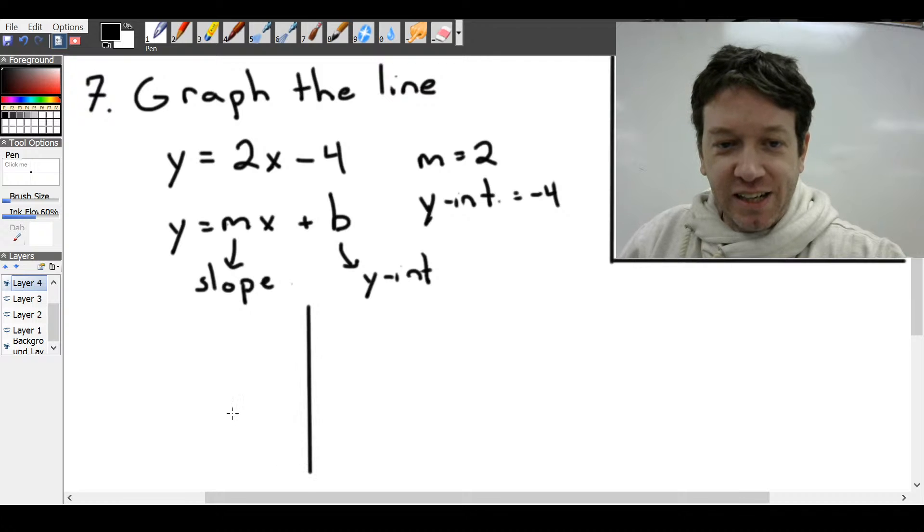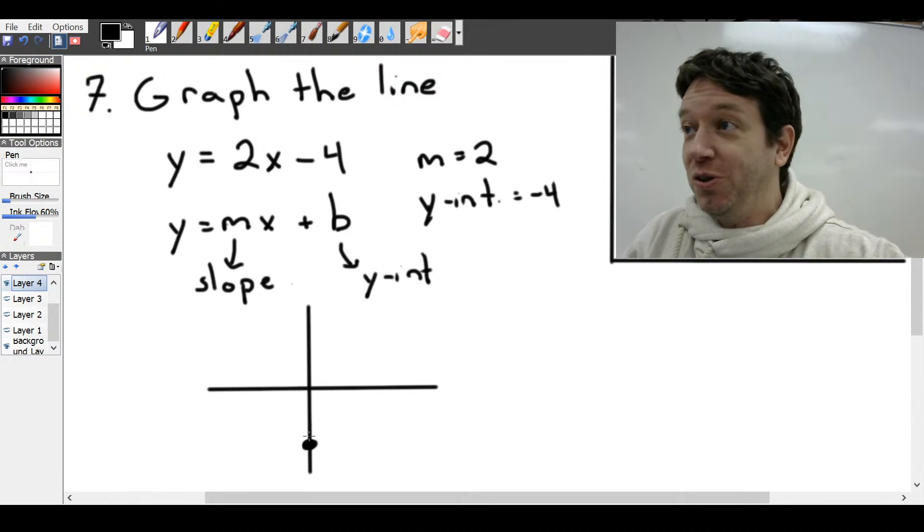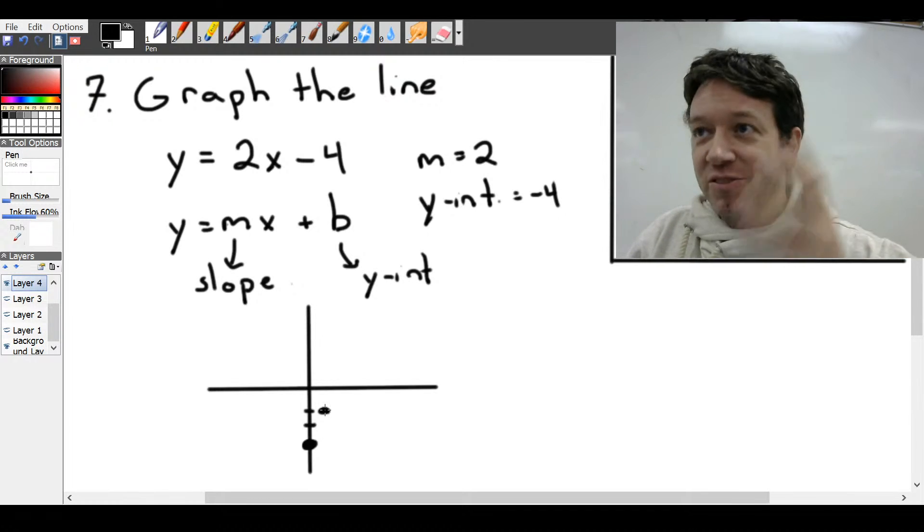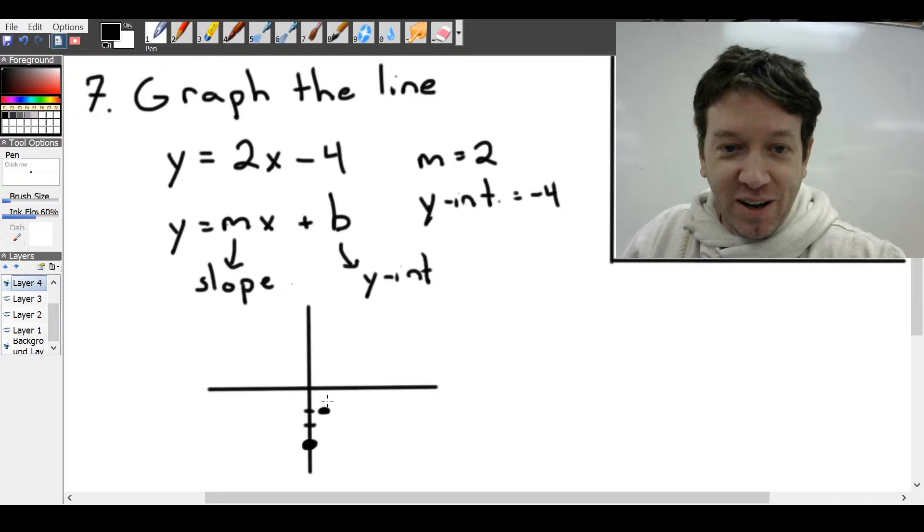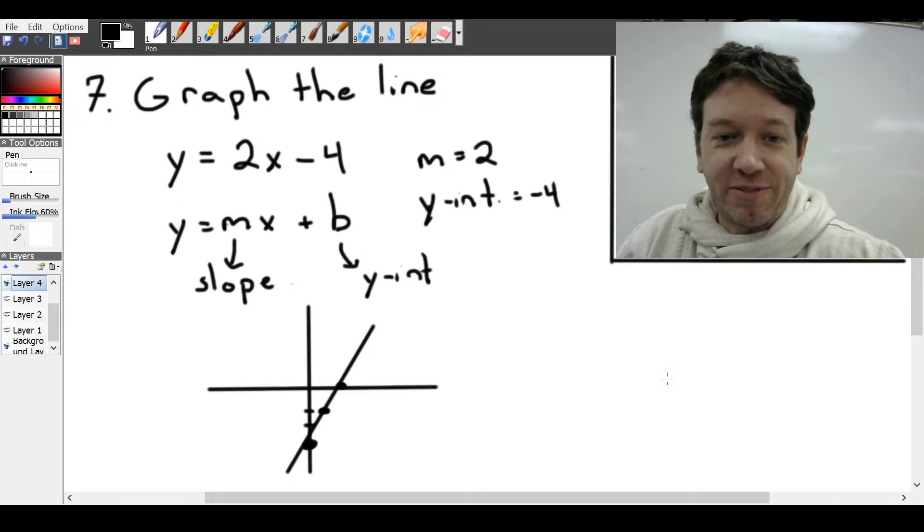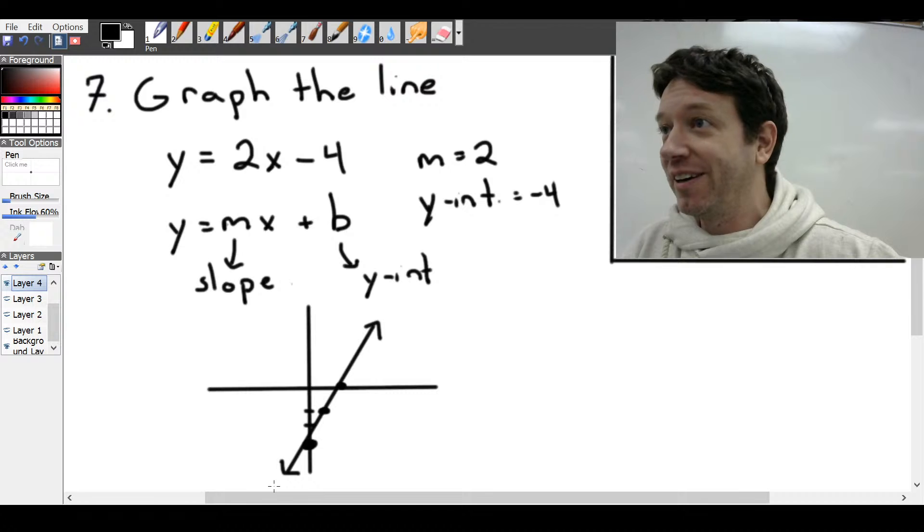Just do a rough sketch here. Y-intercept being negative 4. So maybe 1, 2, 3, 4. About here, there's the y-intercept. And a slope of 2. So slope is rise over run. So what we can do is go up 2. And then over 1. You only need to do that once, because once you have two points, you have a line. But if you wanted to continue, you can go up 2 and over 1. And just connect them in a line. And there's your graph. And then we usually put arrows on both ends, just to indicate that that line goes off forever in both directions.